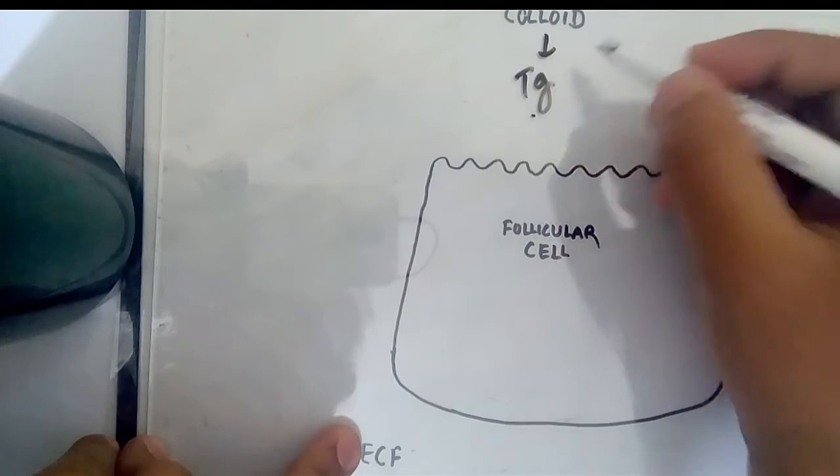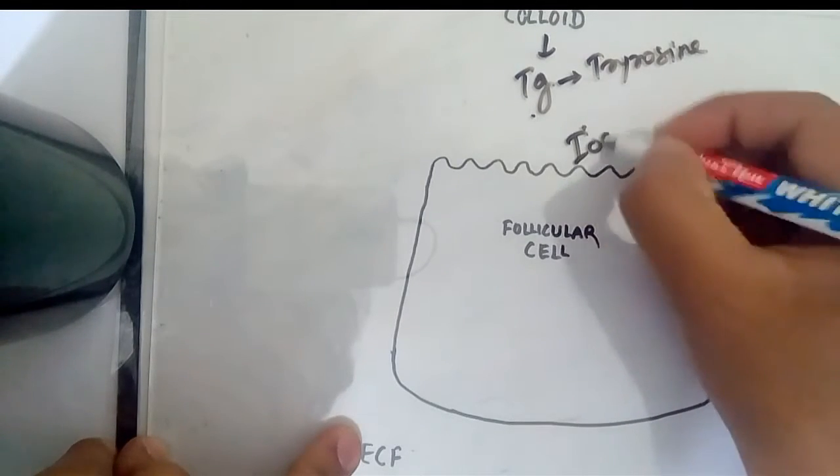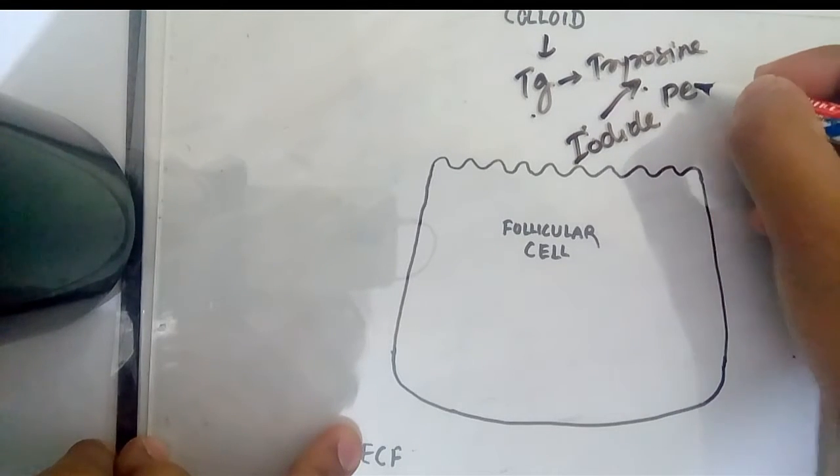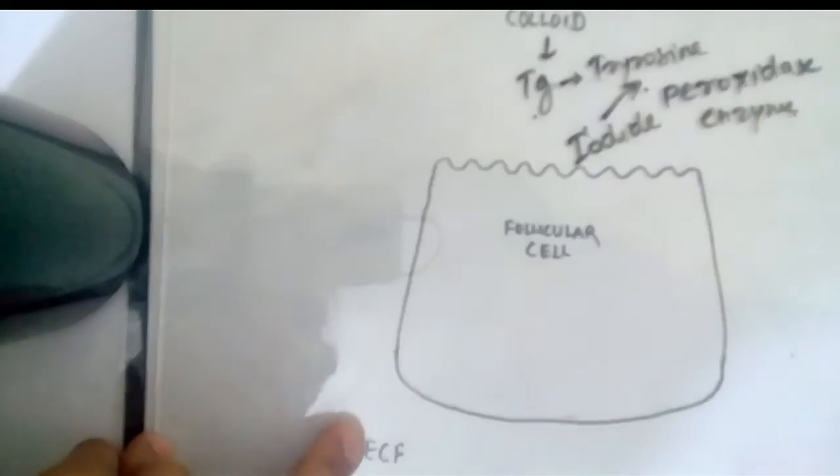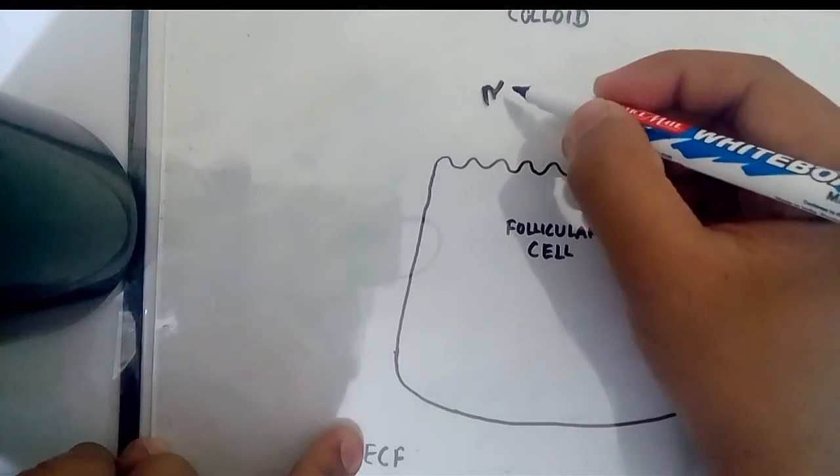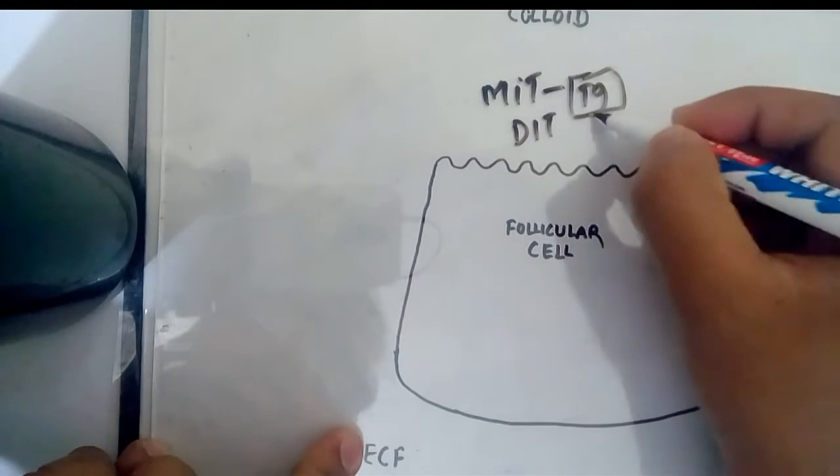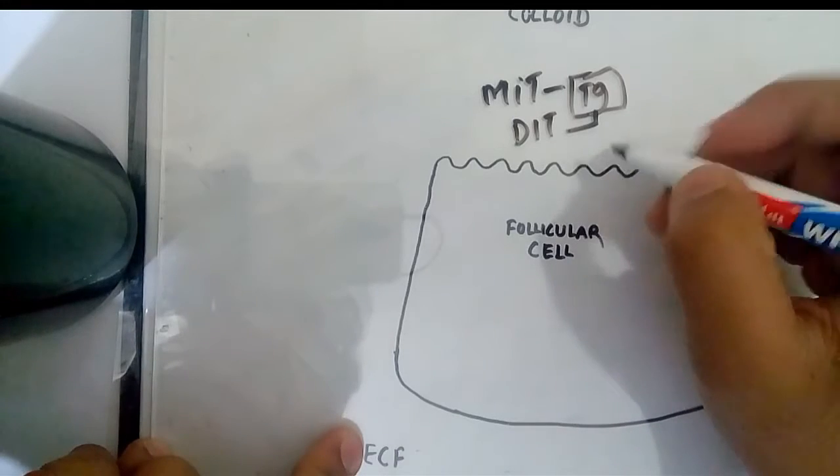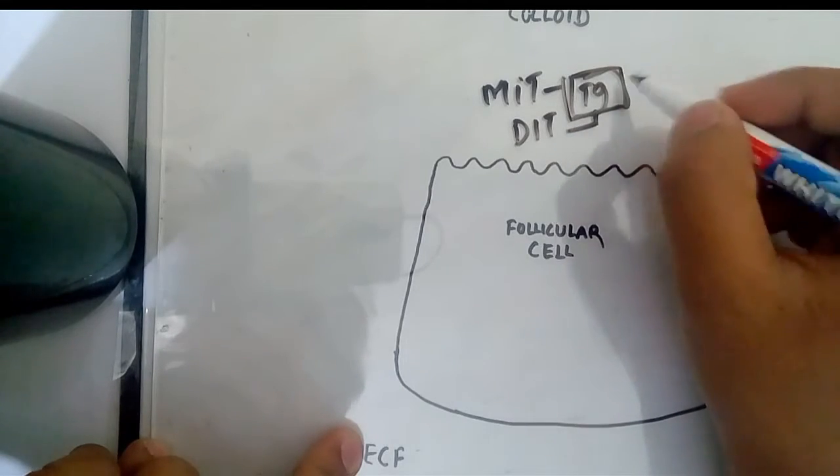After it reaches the colloid, the colloid secretes thyroglobulin. Thyroglobulin has tyrosine on its surface. The iodide is incorporated to this tyrosine by peroxidase enzyme or oxidase enzyme. After this incorporation there is the formation of monoiodotyrosine and diiodotyrosine, MIT and DIT. Because of the peroxidase enzyme, the iodide was incorporated on the tyrosine which was on the surface of the thyroglobulin secreted by colloid.